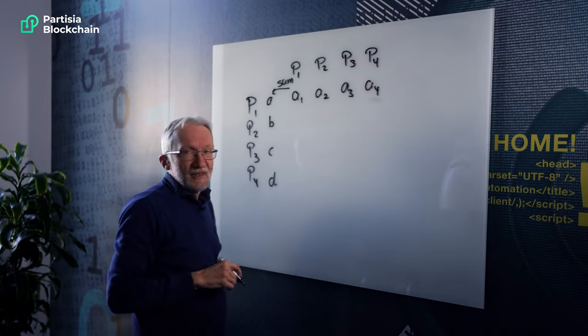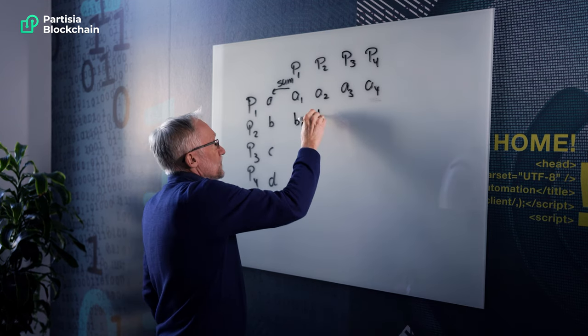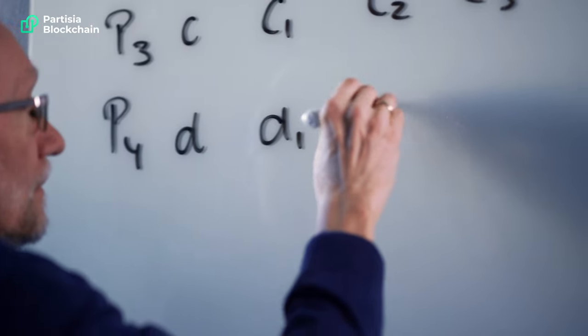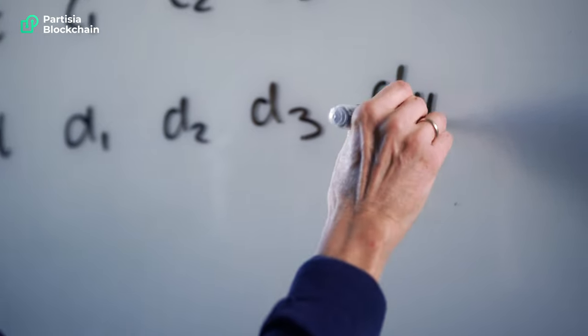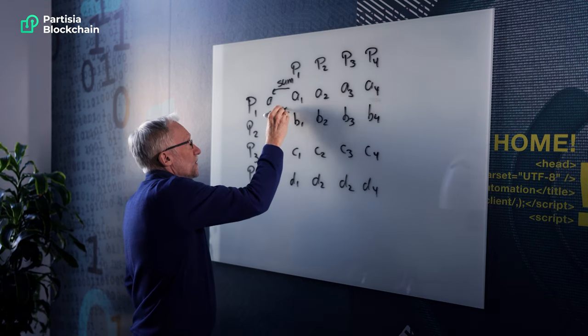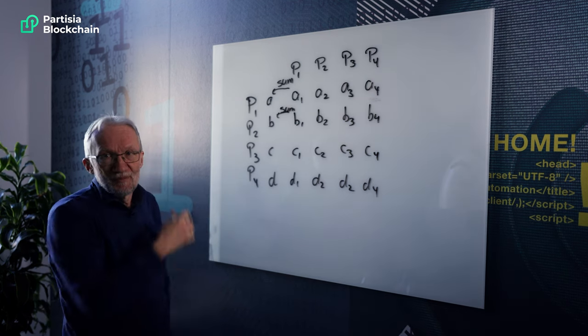And then all the other guys do exactly the same thing. So the second guy will choose his numbers, B1 up to B4. I'm just going to take the time to write them all for the third guy and the fourth guy. And we have, of course, the same sum relation here that all the numbers in the row sum to the salary in that row, right?